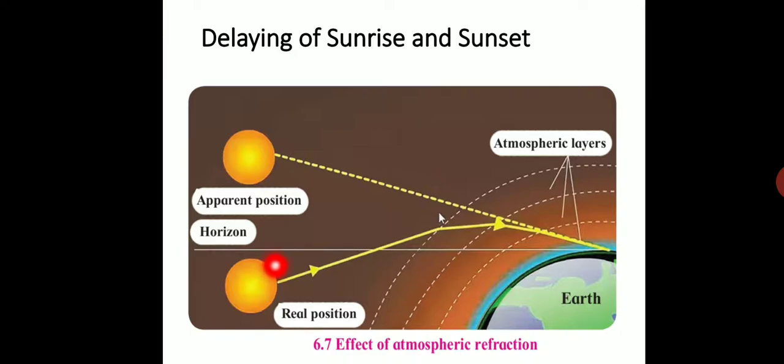Before sunrise or after sunset, the sun is actually below the horizon. But when the sun's rays enter this atmosphere, because of refraction they bend toward the normal and can easily reach the observer. The observer feels that the sun is at this position - this is the apparent position.